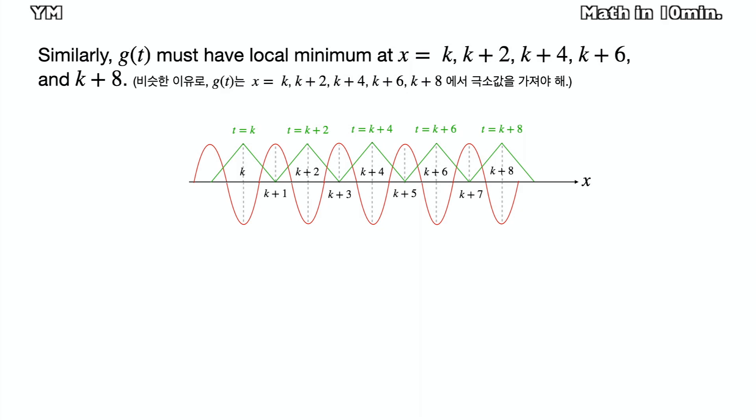It also has local minimum points where t equals k and t equals k plus 8. However, gt is integrated from k to k plus 8. So gk is integrated from k to k plus 1.